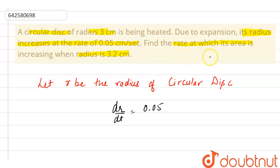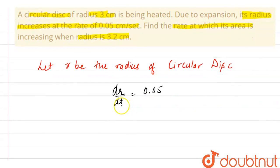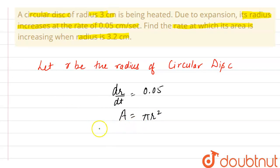And the question says to find the rate at which its area is increasing. So we know that the area of any circular disk of radius R is — here we are representing the area by capital A — and we can say that A equals pi r squared. And if we differentiate both sides with respect to t, then we can write dA/dt equals — here pi is constant, so it stays as is — and differentiation of r squared with respect to t is 2r dr/dt.